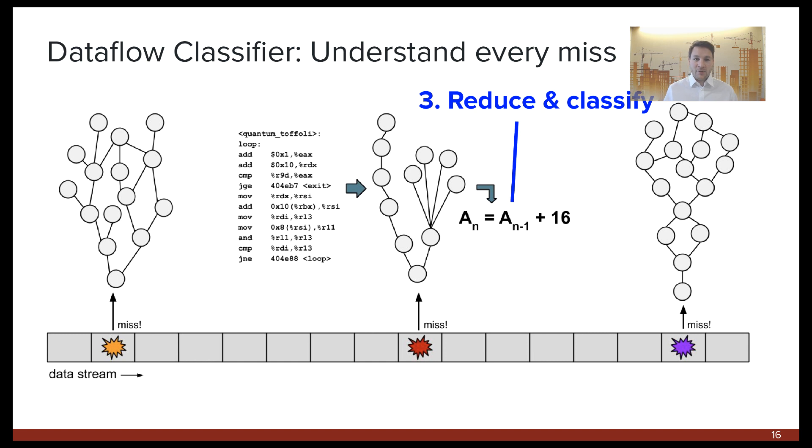Finally, with a fully reduced data flow graph, we can classify its underlying fundamental formula and reason about its behavior. One thing that's nice about doing this at the instruction level, instead of, say, higher up at a source code level, is that we have complete generality to analyze anything that can run on the system.